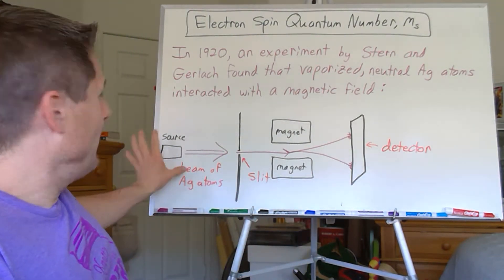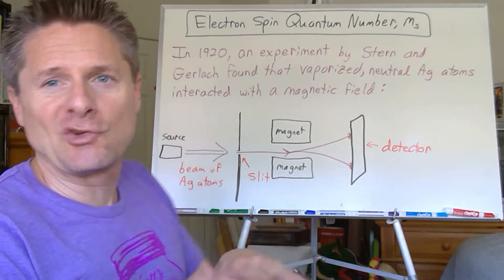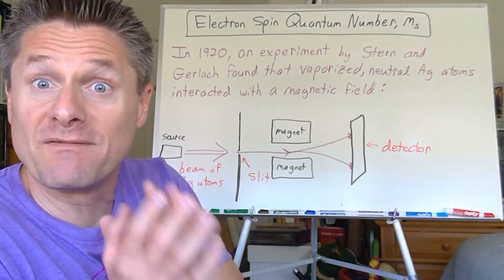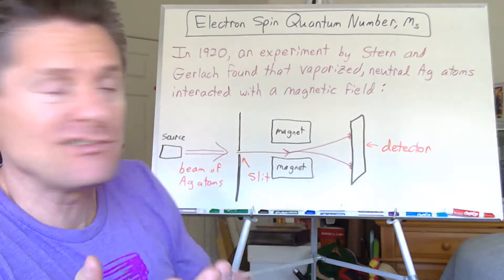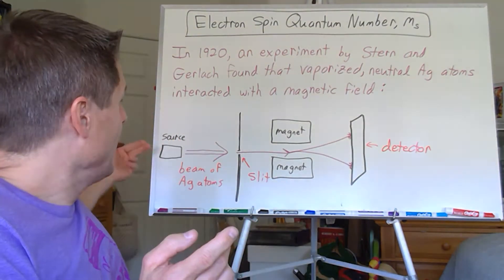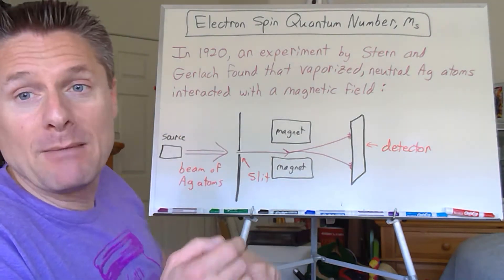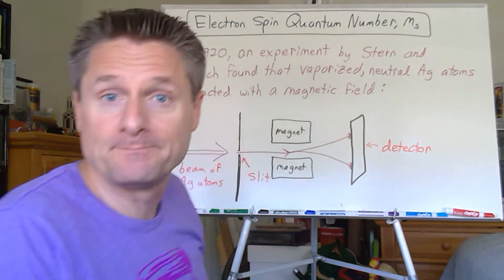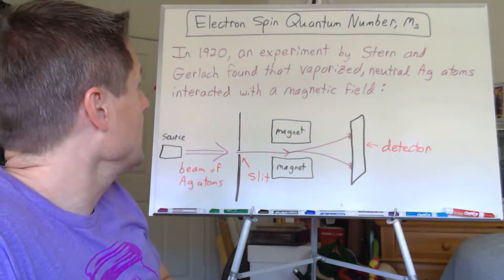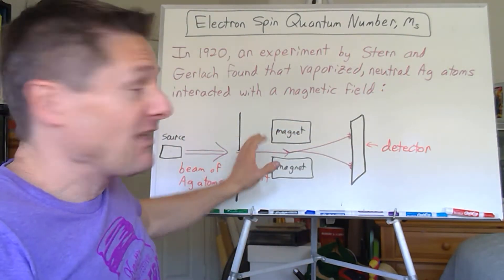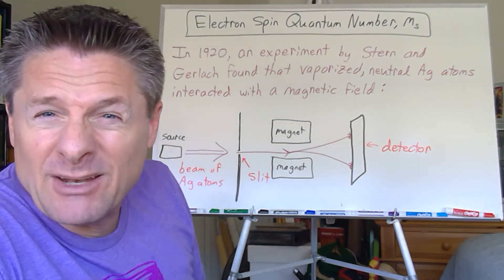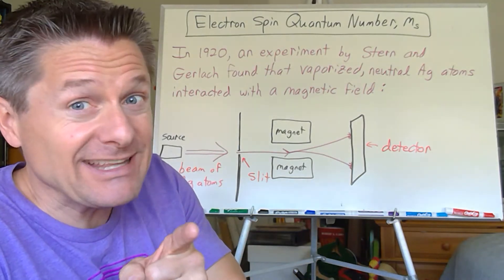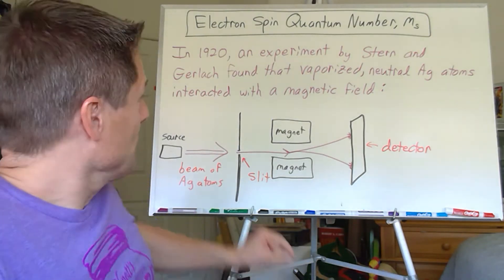In the Stern-Gerlach experiment, they had a source — they took silver and vaporized it in an oven to create a beam of silver atoms. Now, we know that silver atoms are neutral, but they found that those atoms interacted with a magnetic field, which was not expected.